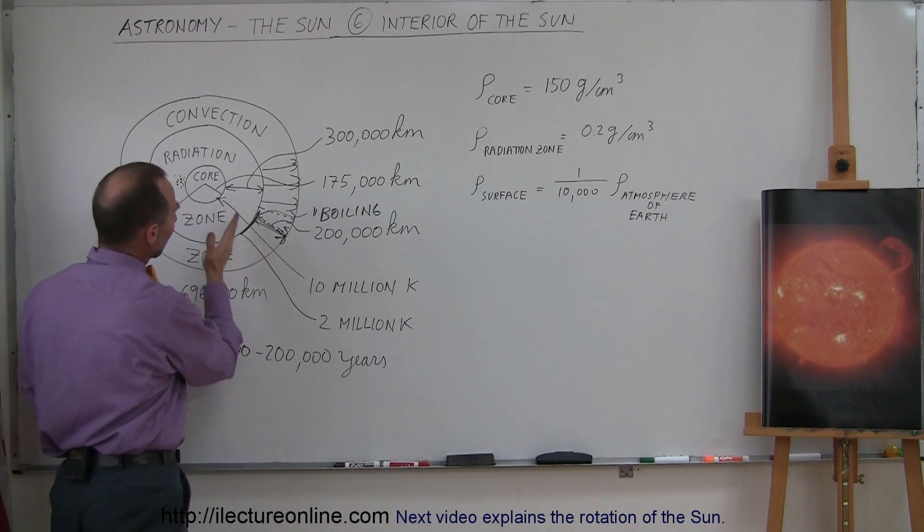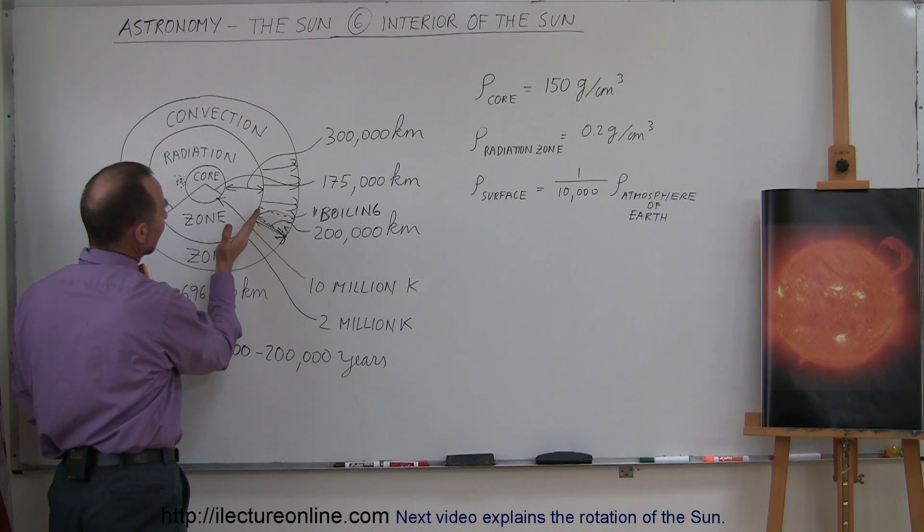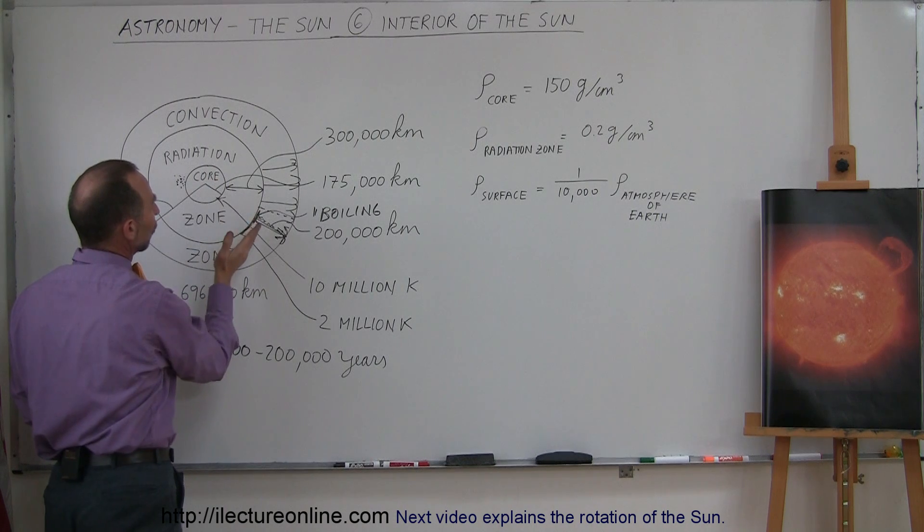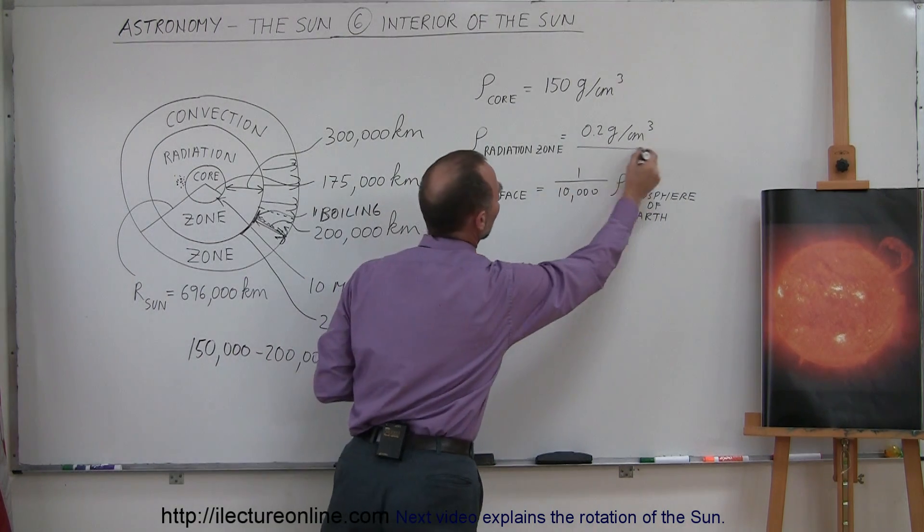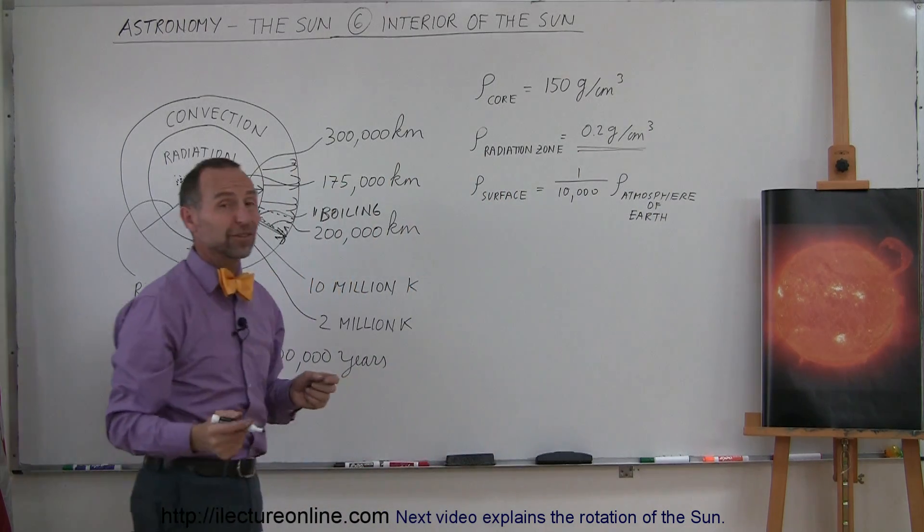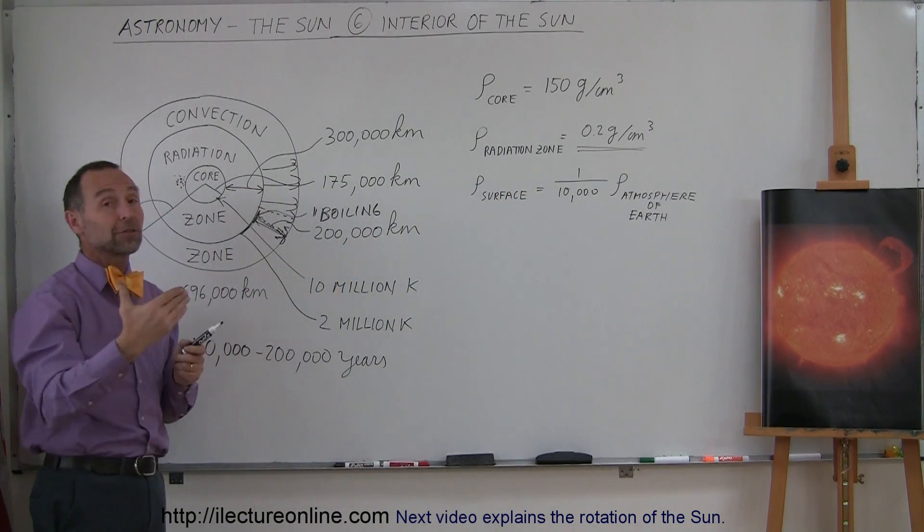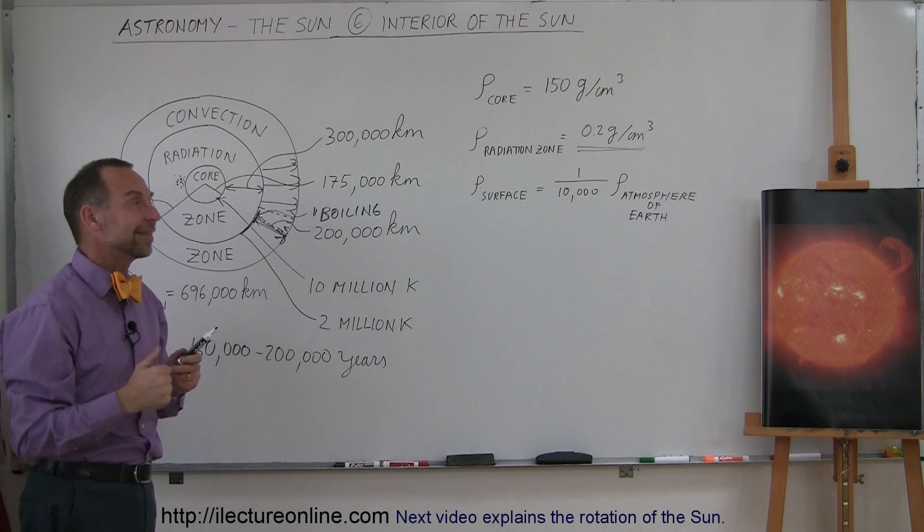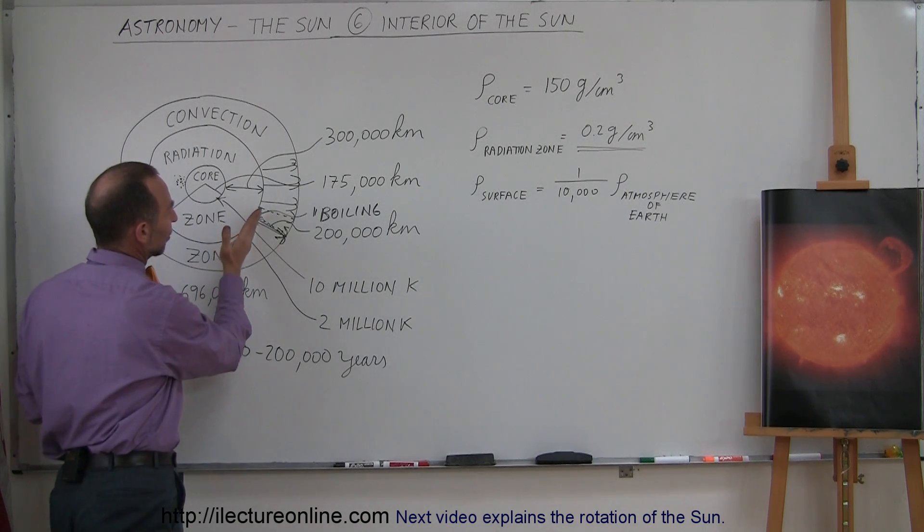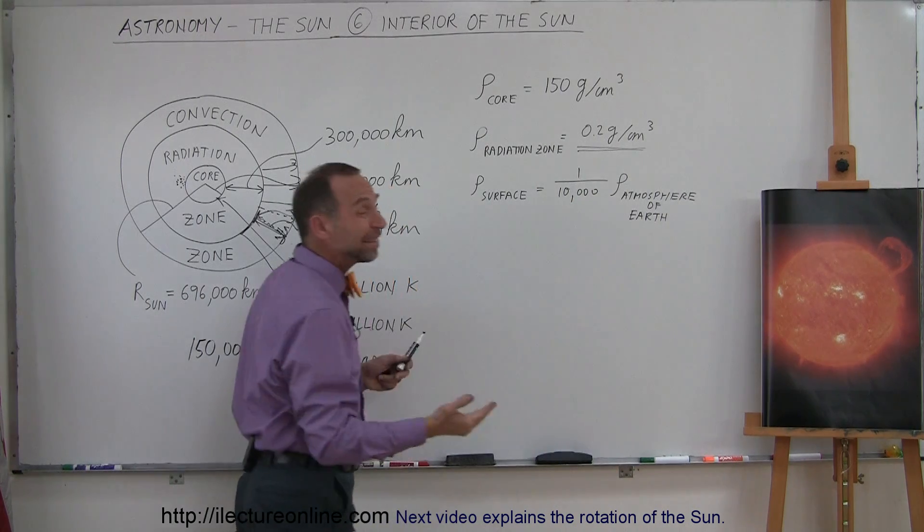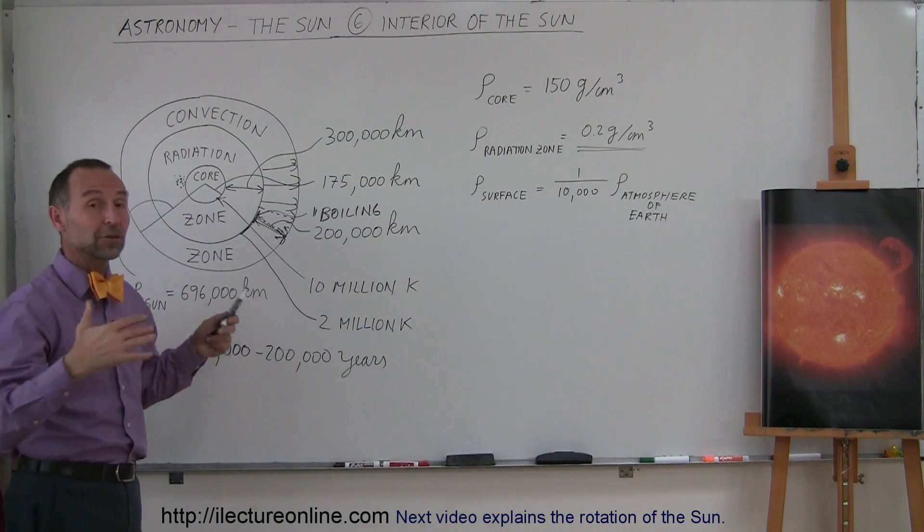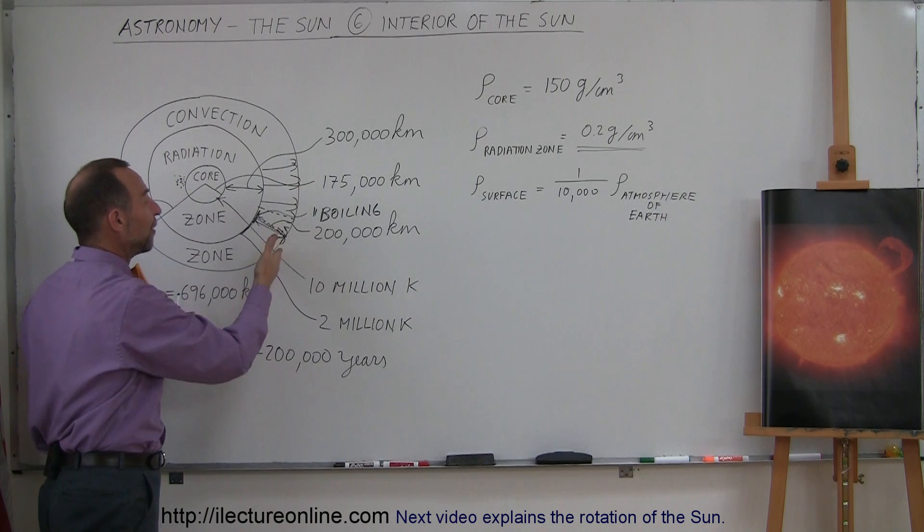Now, density-wise, notice that by the time you reach the outer region of the radiation zone into the inner region of the convection zone, the density has dropped to less than the density of water on Earth. Still dense for a gas, very dense for a gas, but much less dense. And finally, by the time the gases get all the way to the very surface of the Sun, the density at the surface is only about 1/10,000th the density of Earth's atmosphere. So, extremely rarefied.